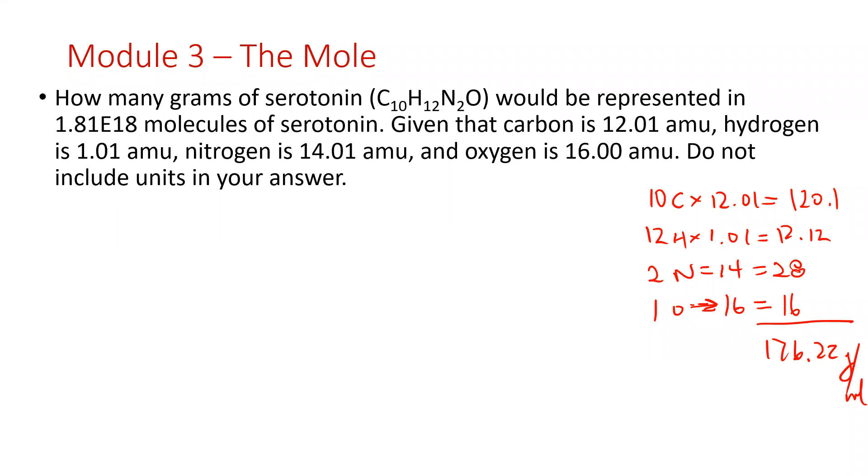How many grams of serotonin (C10H12N2O) are represented in 1.81×10^18 molecules of serotonin? Given that carbon is 12.01 amu, hydrogen is 1.01 amu, nitrogen is 14.01 amu, and oxygen is 16.00 amu.